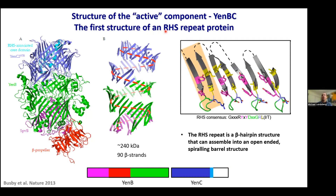Part of the NC structure is missing because the C-terminal domain was readily cleaved during purification. To increase chances of getting a crystal structure we generated a construct without this C-terminal region, which is bioinformatically characterized as a hypervariable region. This is the first example of a structure of an RHS repeat-containing protein. RHS repeat-containing proteins are found throughout bacteria and eukaryotes, characterized by a short ~15 amino acid consensus sequence with a strongly conserved central YD dipeptide. Our structure shows that the RHS repeat is a single strand-turn-strand motif — something not known previously without structural data.